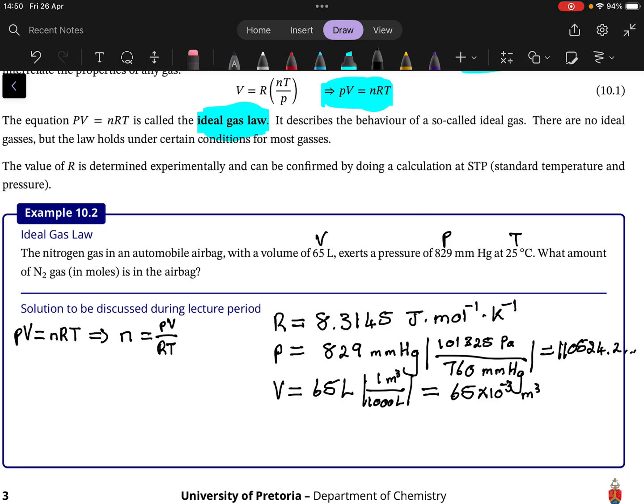And the temperature you just take from degrees celsius to kelvin. So that's 25 plus 273.15, it gives us 298.15 kelvin.